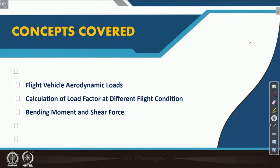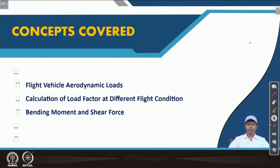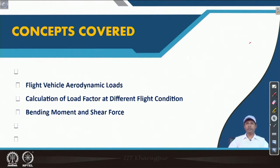Before we go into those, it is better to have a recapitulation. We have already learned in our previous lecture what the flight envelope is and how the flight envelope governs the design of an aircraft, how airworthiness criteria and regulations come and we need to follow those. We have also learned how different loads are encountered by an aircraft, the history of aviation and aircraft, and the history of solid mechanics which lays the path of structural analysis with respect to aircraft structures.